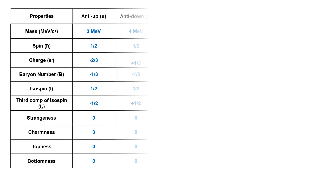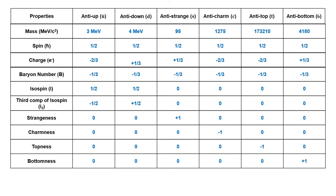There are also 6 anti-quarks associated with all these 6 quarks, which are represented by placing a bar over them. As stated earlier, the sign of all additive quantum numbers is opposite for antiparticles. Therefore, anti-quarks also have baryon number, third component of isospin, strangeness, charmness, topness, and bottomness of opposite sign.